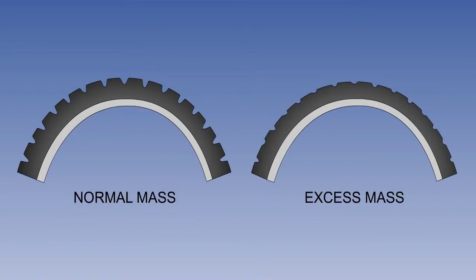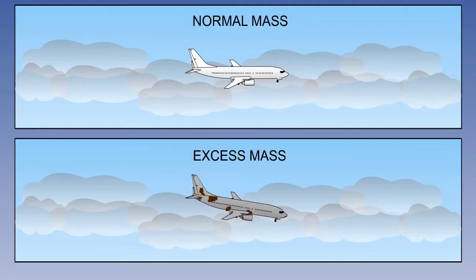A very noticeable effect of exceeding mass limits would be on the aeroplane's tyres and brakes. The excess mass would quicken the wear of tyres and brakes, shortening their life. Exceeding mass limits will also place undue stress on the airframe, which would eventually shorten the fatigue life of the aeroplane.